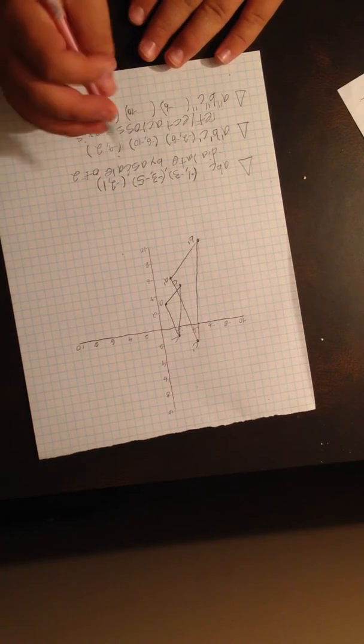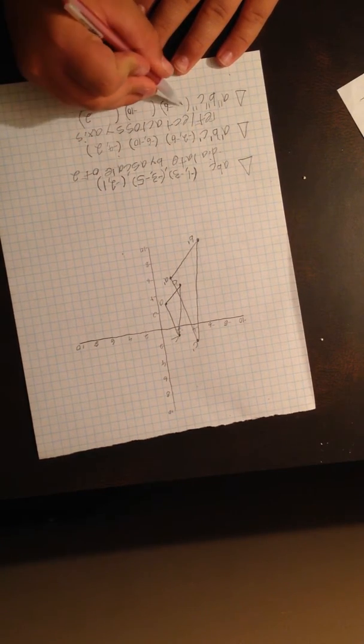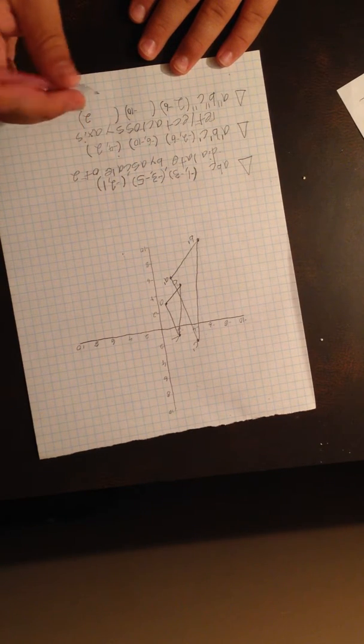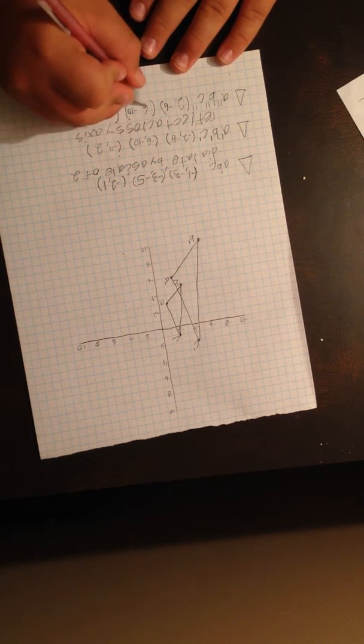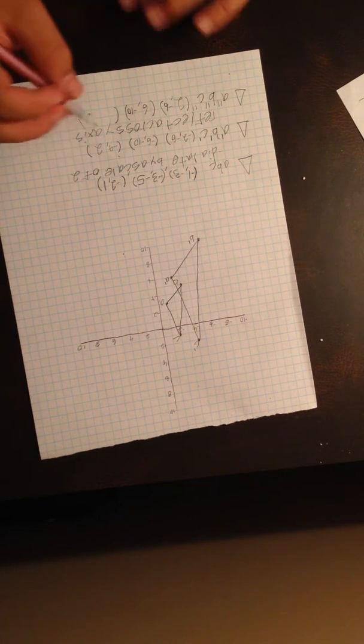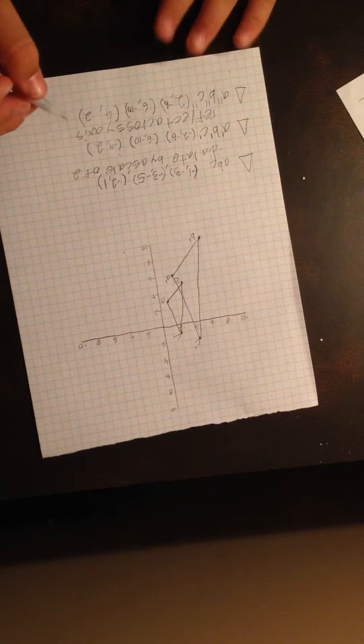So that would make A double prime 2, negative 6. And B double prime would be 6, negative 10. And C double prime would be 4, 2.